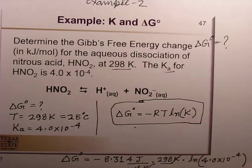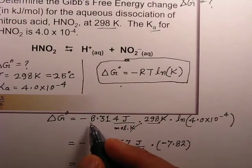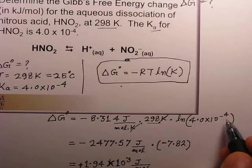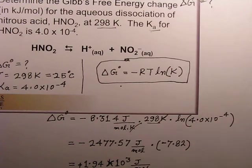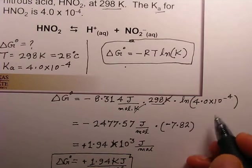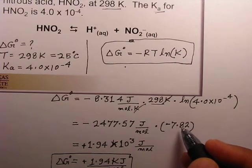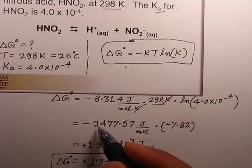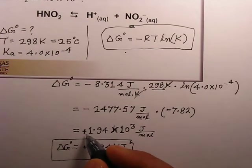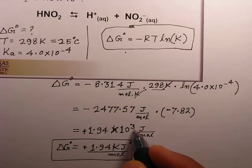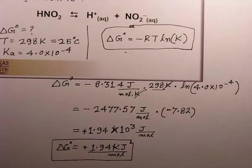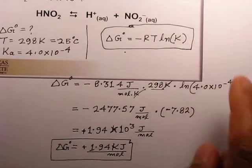Using delta G° = -RT·ln(K): R is 8.314, T is 298 K, and K is 4.0 × 10⁻⁴. Kelvin cancels out. ln(4.0 × 10⁻⁴) equals minus 7.82, and minus 2477.54 multiplied by minus 7.82 gives a positive answer of 1.94 × 10³ joules per mole, or 1.94 kilojoules per mole.